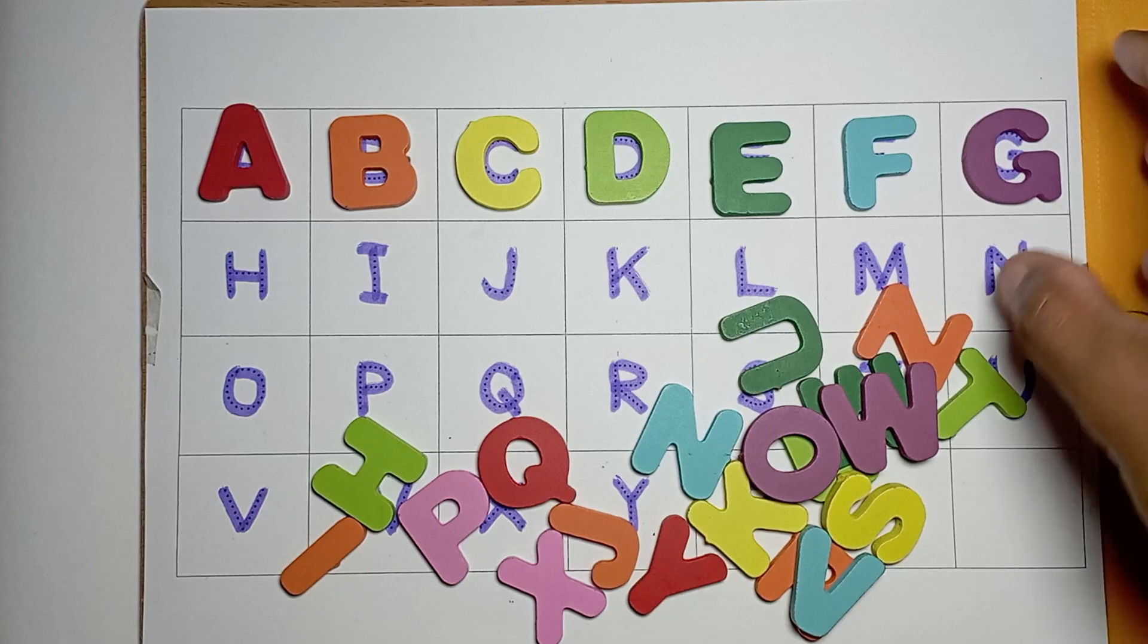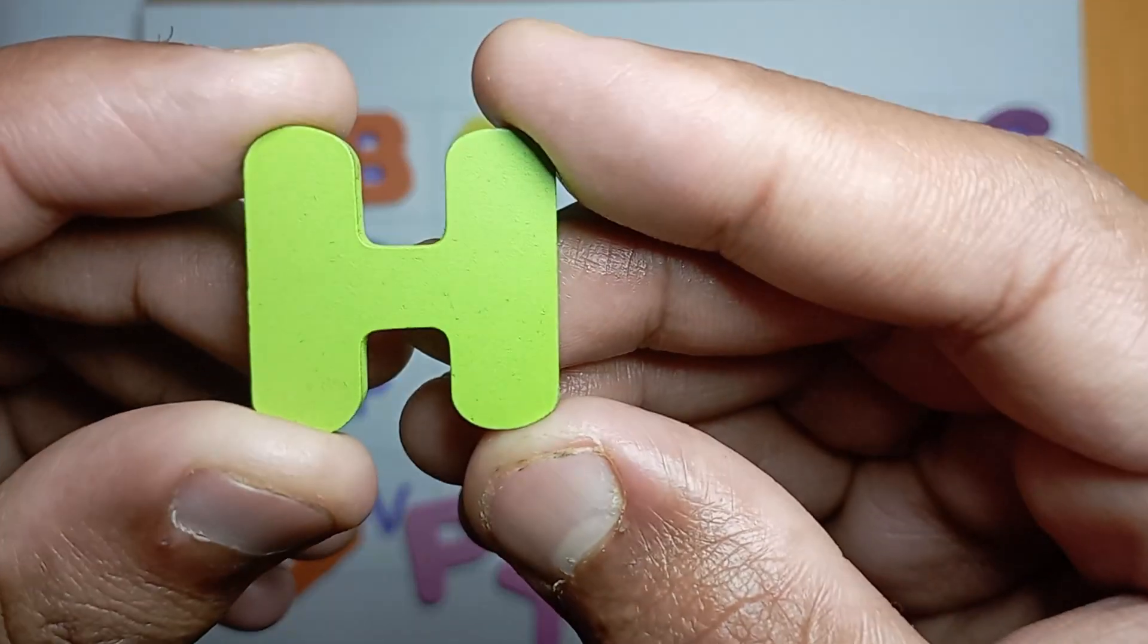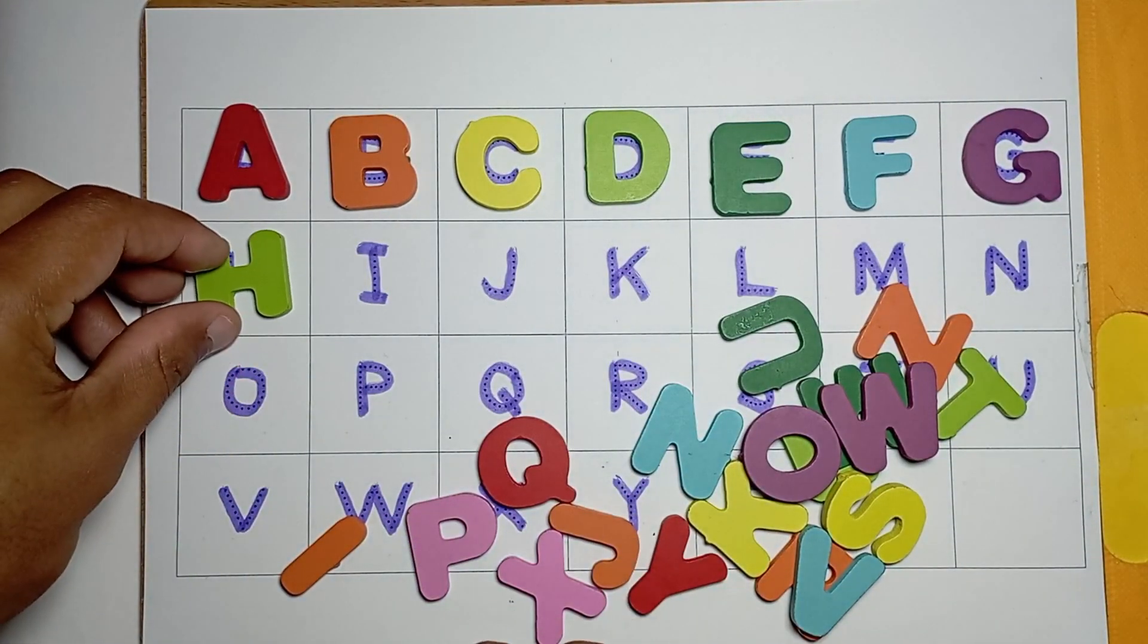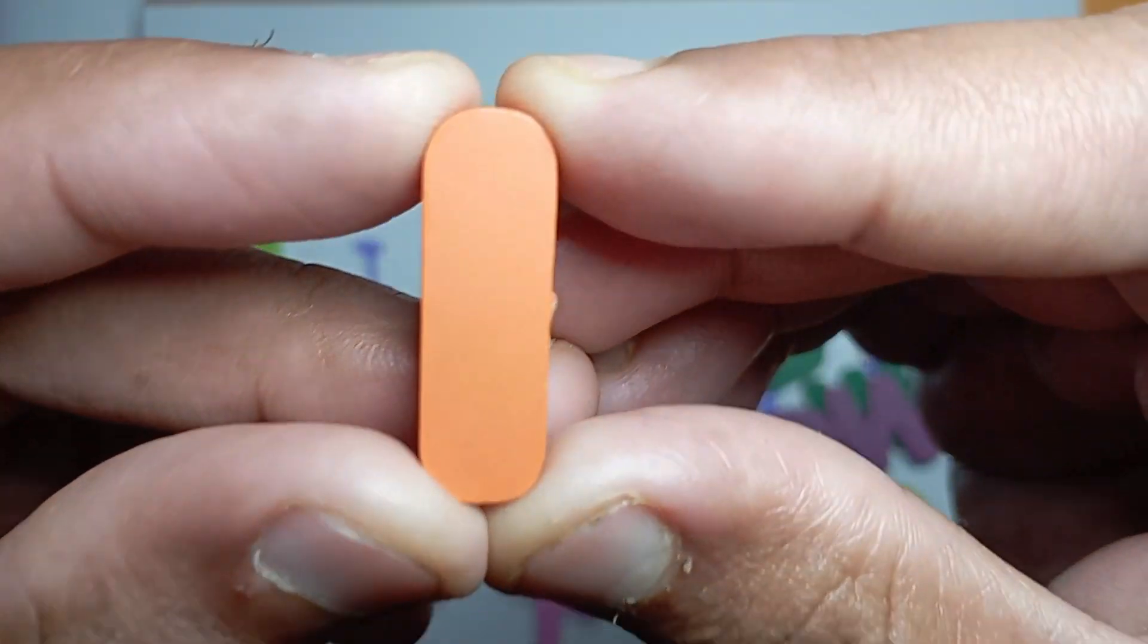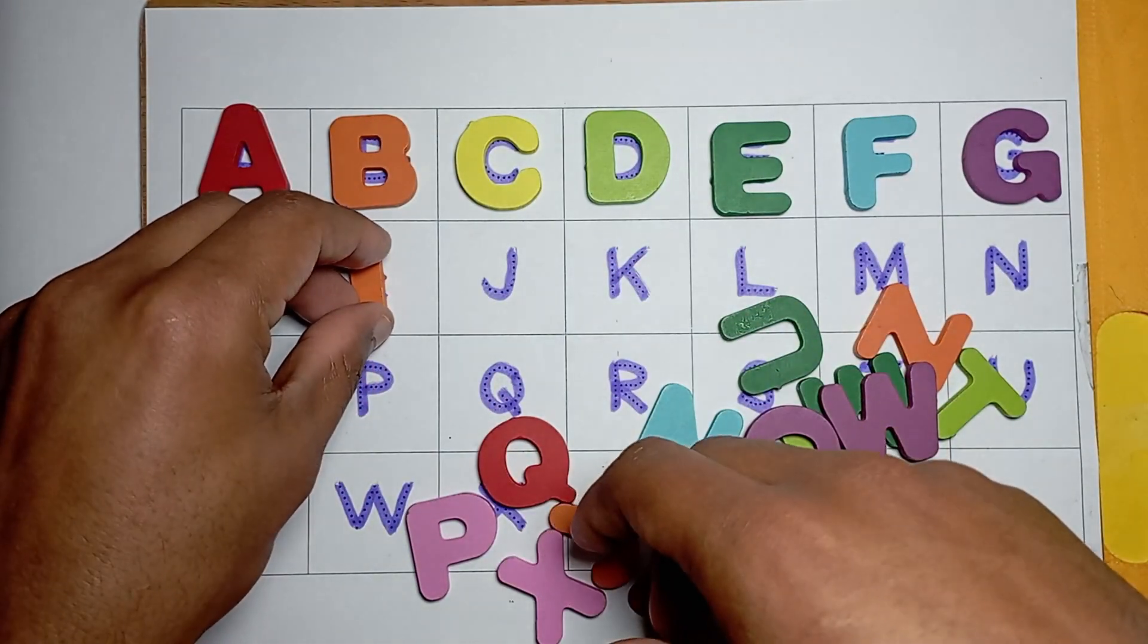G for good, G for good. H, H for hen, H for hen. I, I for ice cream, I...